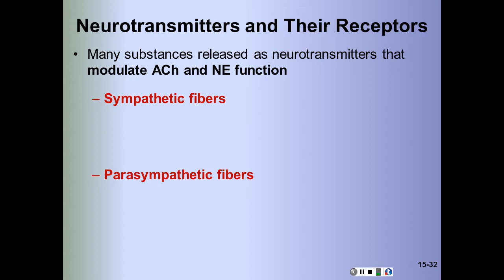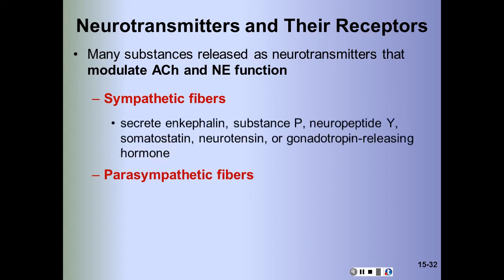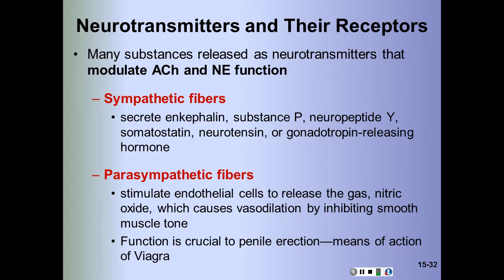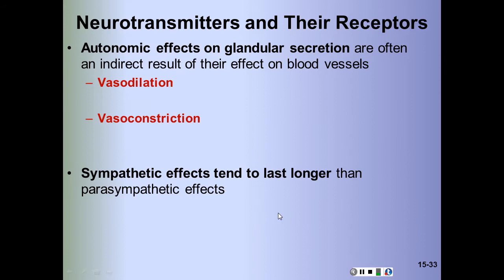The ANS also employs other neurotransmitters. Many fibers secrete neuropeptides that modulate acetylcholine and norepinephrine activity. Sympathetic fibers may secrete substance P, somatostatin, and neurotensin. Some parasympathetic fibers release nitric oxide, which allows blood vessels to dilate.